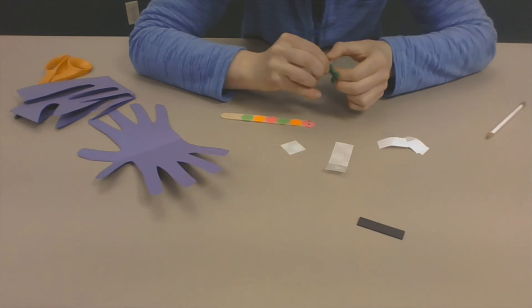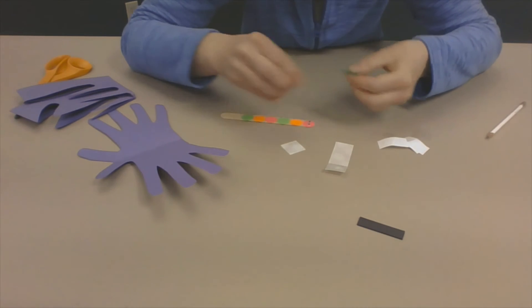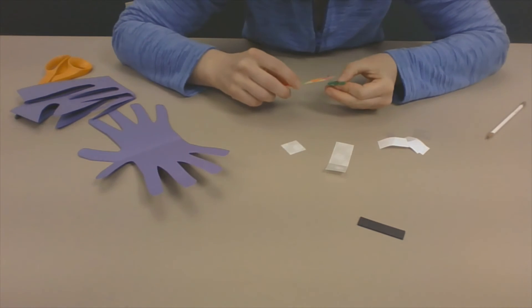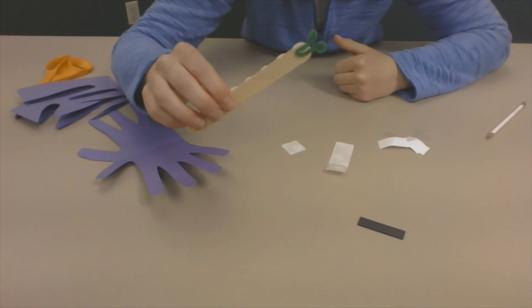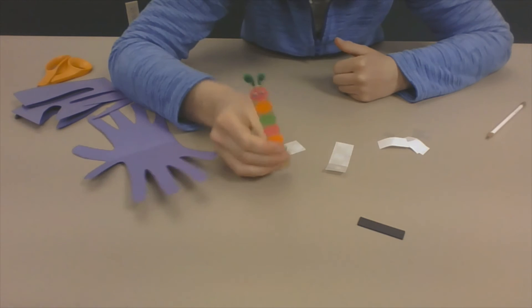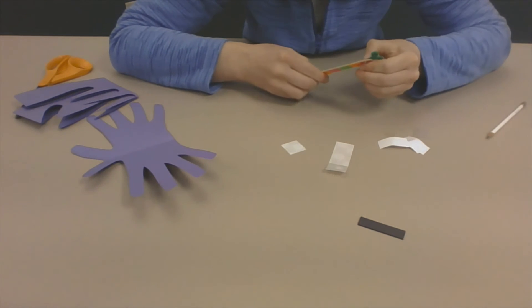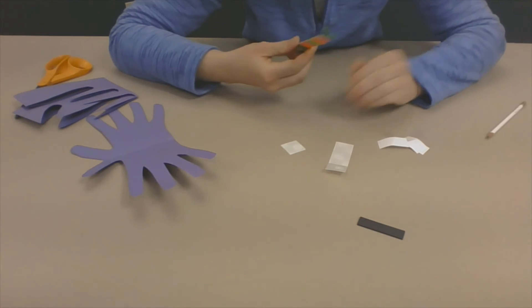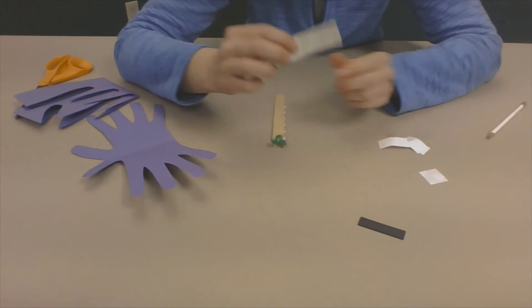And then I'm gonna put it on the back of my popsicle stick. So you can see I just stuck it right there on the back and there's my butterfly with his antennas.